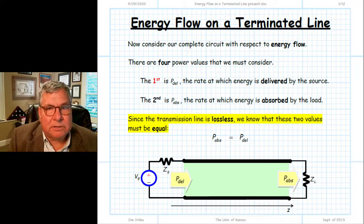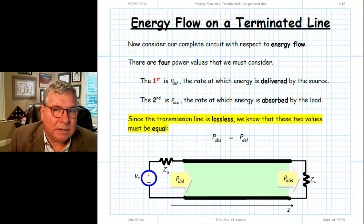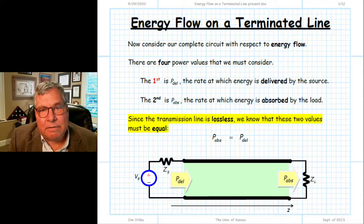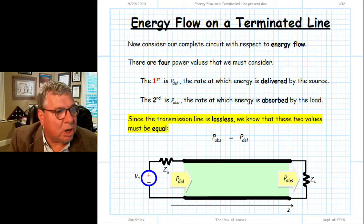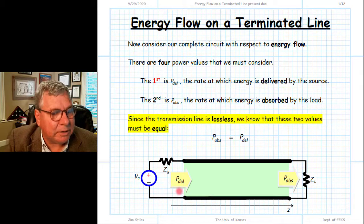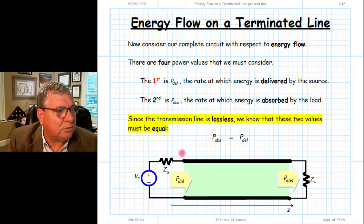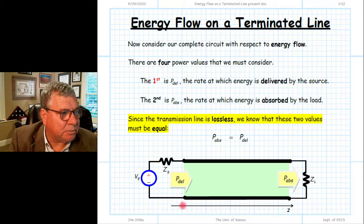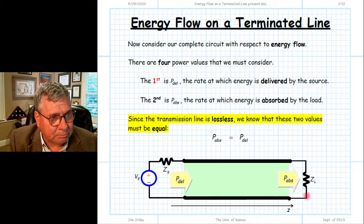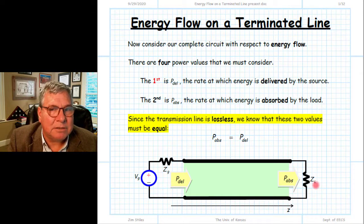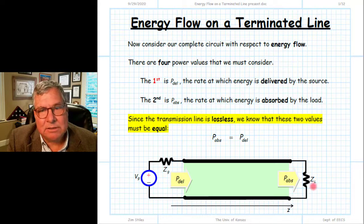Now that we've completed the analysis of a transmission line terminated with a load and one that has a source connected to the other end, we have a complete circuit. Let's go back and take our results to see what they mean in terms of the rate of energy flow — the power associated with the transmission line connecting source and load. The first power we consider is the power delivered from the source: the rate at which energy is flowing out of the source. The second power is the power absorbed by the load — the rate at which energy is crossing the plane at the end of the transmission line and entering the load impedance.